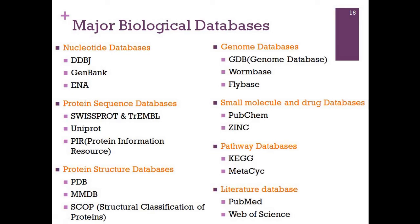Other than this classification, we can look at biological databases in terms of their content. For example, we have nucleotide databases containing nucleotide sequences, protein structure databases with 3D structural information on protein conformation, genome databases, small molecule and drug databases, and literature databases like PubMed and Web of Science. One can always search Google or look through literature to find databases based on their content.